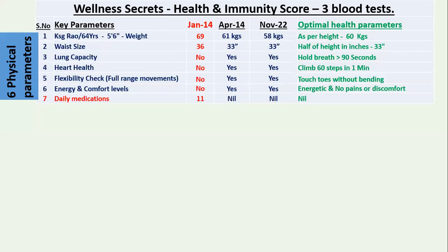There are six physical parameters. I've given my own parameters from January 2014 and April 2014 — in four months I improved my health, and then after about eight years. I'm 64 years old, my height is five feet six inches, my weight is 60 kg but I used to be 69. They say weight should be half your height in inches, so 33 inches is the waist target.